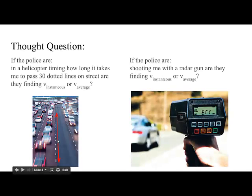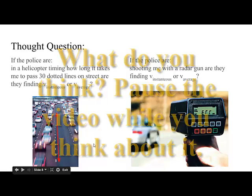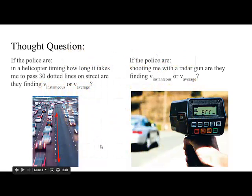Alternatively, if the police are shooting a radar gun at me, are they finding instantaneous velocity or average velocity? If you said instantaneous velocity, you'd be right, because the point at which the policeman pulls the trigger on the radar gun, it tells the policeman what the speed is at that very moment. Now, if I see the policeman in my little red Ferrari, I probably hit the brake, and the number that shows up in the policeman's gun changes immediately. These are instantaneous, split-second velocities.